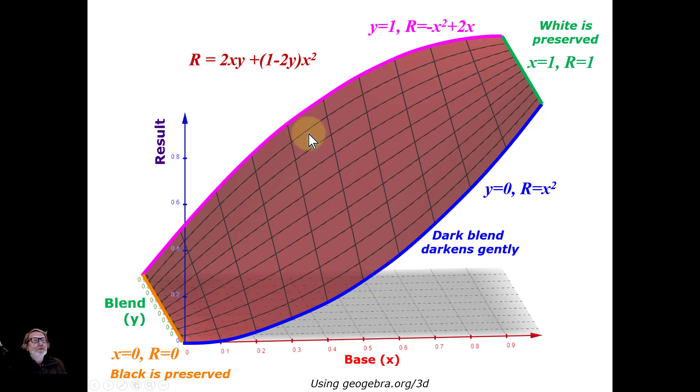At the other end, up here, I've got y is 1. Put y into 1 here and you end up with minus x squared plus 2x, which gives you this curve. Which is like pulling up the curves control. Which makes things lighter. And then it just smoothly joins together all the way down. Isn't that neat?